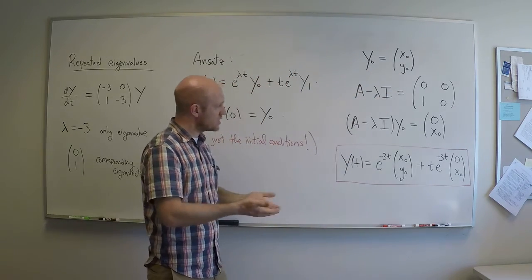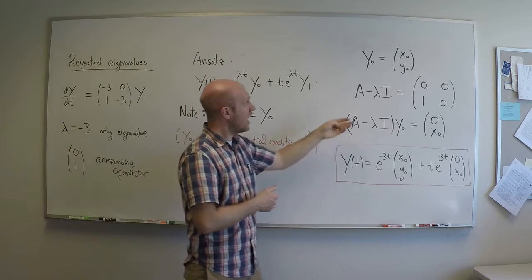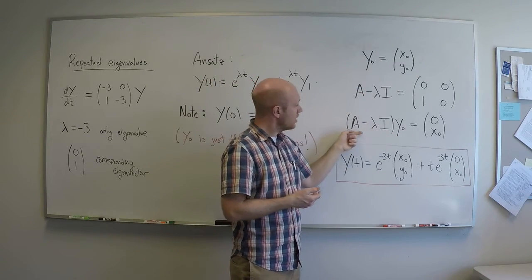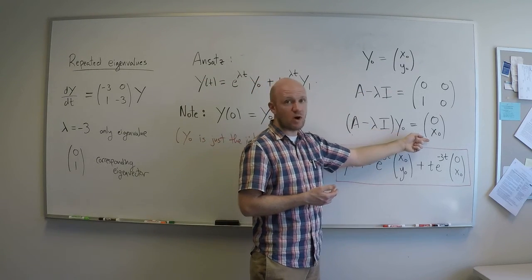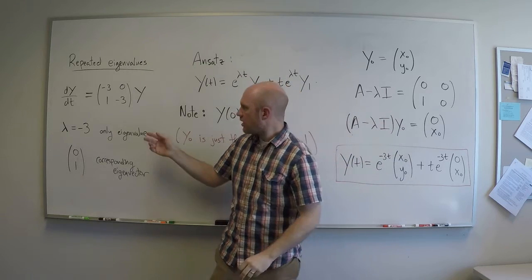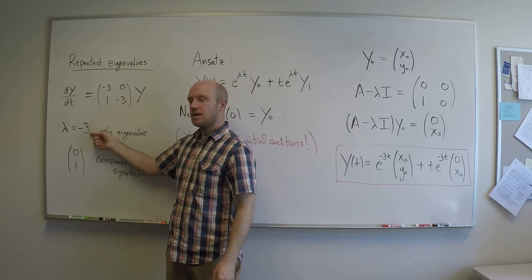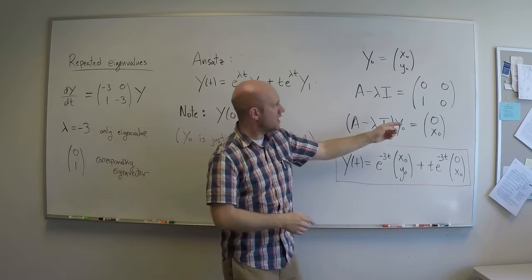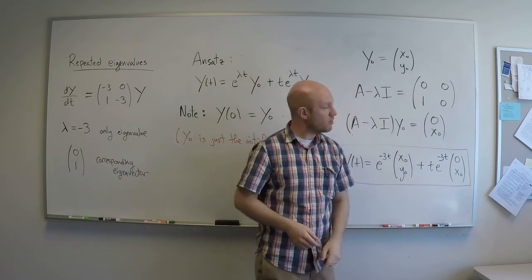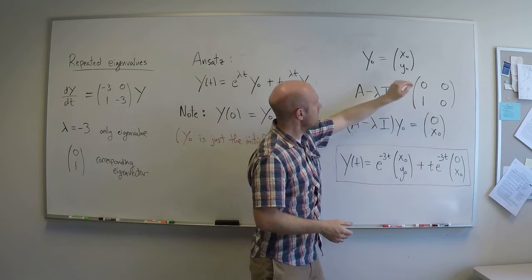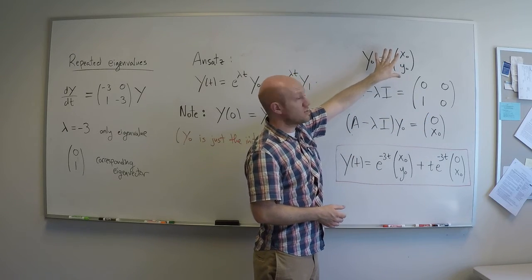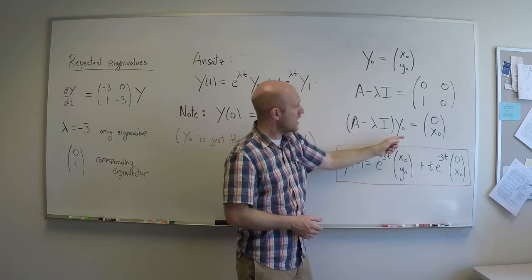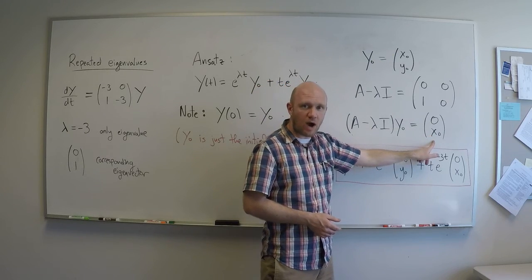Then, from the consequences that we just derived, I know that y1 must be (A - λI) times y0. Well, A - λI for this particular example is, well, I plug in, I subtract lambda is minus 3, and I'll get (0, 0, 1, 0) for A - λI. Apply that matrix to this arbitrary (x0, y0) initial condition, and I get (0, x0). That's my y1.